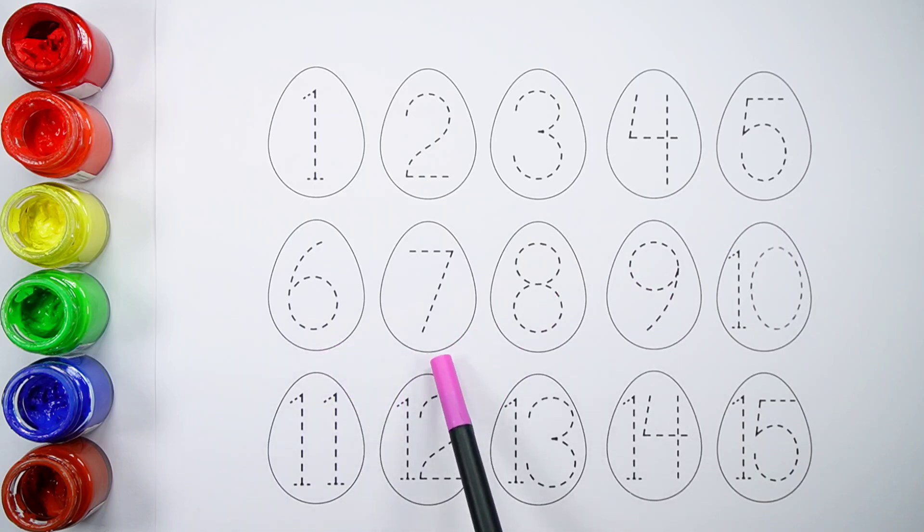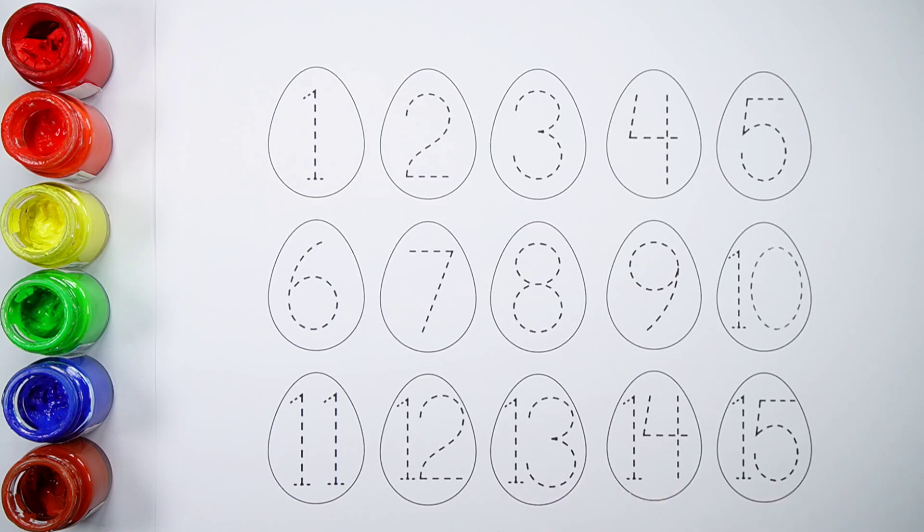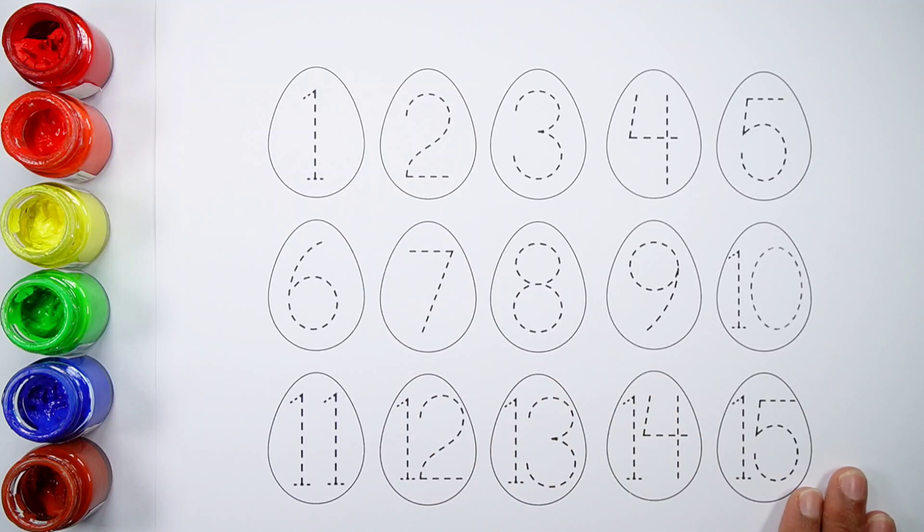8 eggs, 9 eggs, 10 eggs, 11 eggs, 12 eggs, 13 eggs, 14 eggs, 15 eggs. Now let's write these numbers on the eggs.